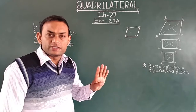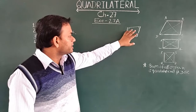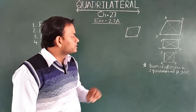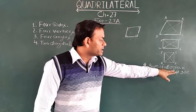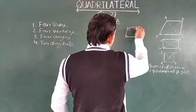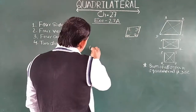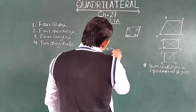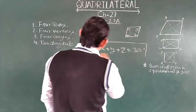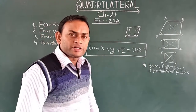In every quadrilateral, four angles are there. As you can see in this figure, at every vertex one angle is there, so that is why every quadrilateral has four angles. One more important thing: the sum of all the angles in a quadrilateral is 360 degrees. Suppose the angles are x, y, z, and w — then w plus x plus y plus z is equal to 360 degrees.